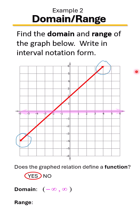Range — how high, how low? Again, we have these arrows here. So the range is going to shoot forever up in the positive region and it's going to shoot forever down in the negative region. So our range is going to be from negative infinity to positive infinity.